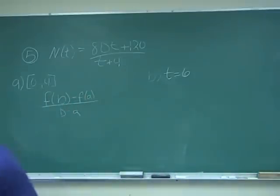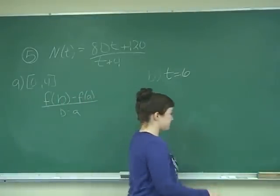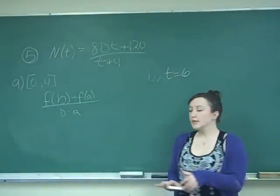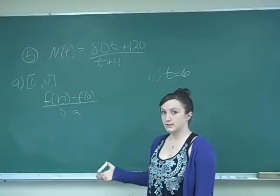So, for the first part, they want us to find the average rate of change. And if you remember, average rate of change is just the F of B minus F of A all over B minus A formula.